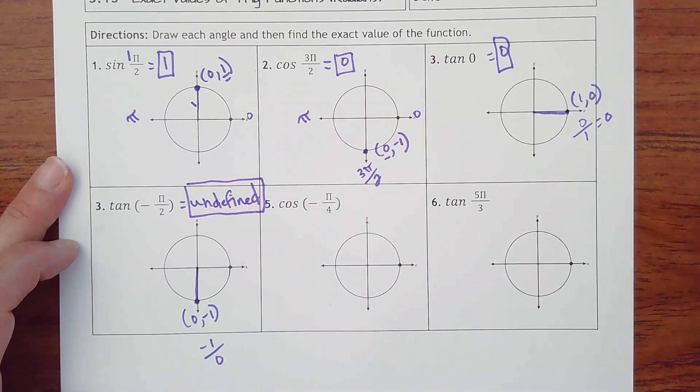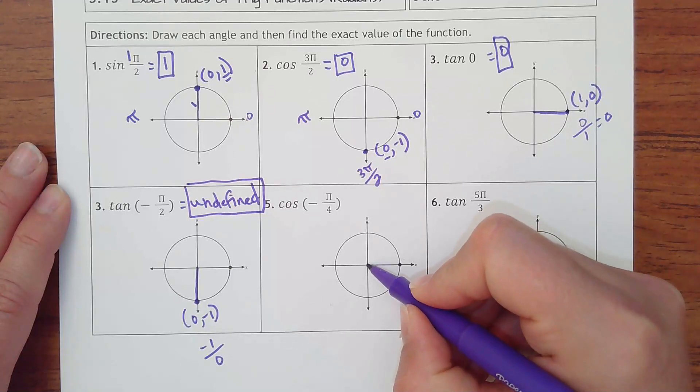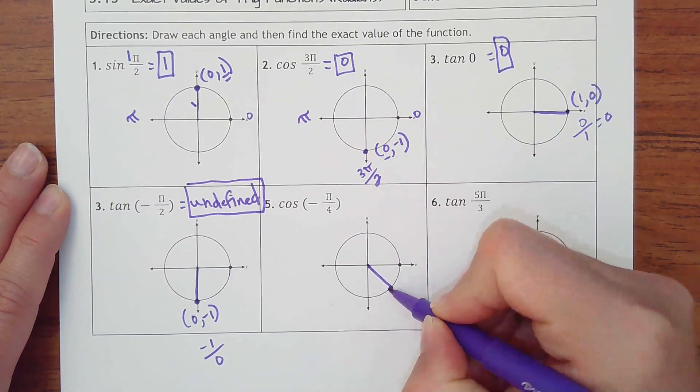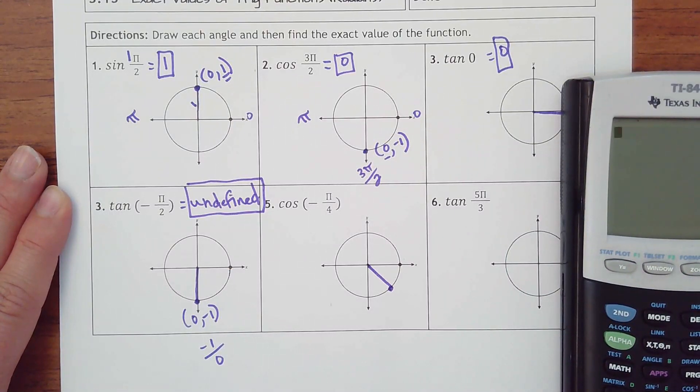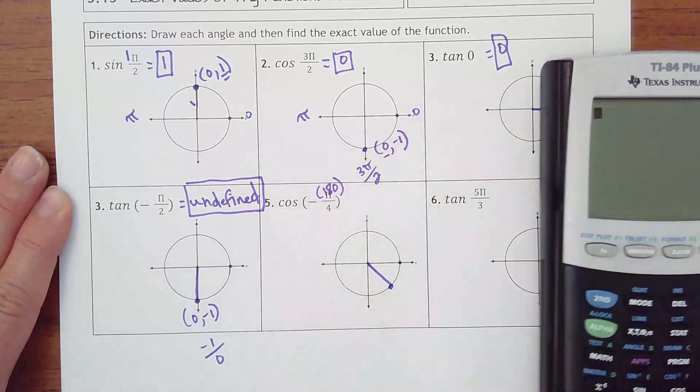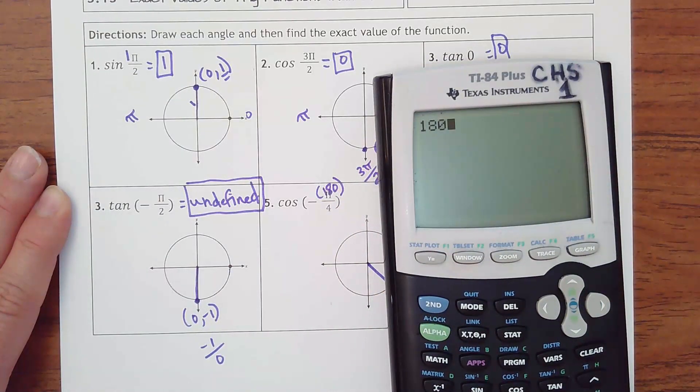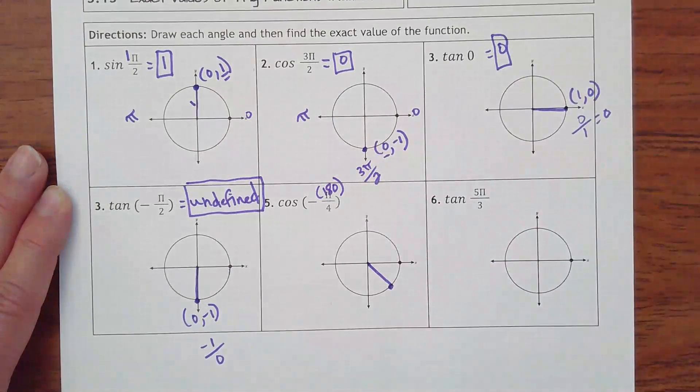Number 5 is cosine of negative 1 fourth of a pi. So 1 fourth of a pi would be here. That would be 45 degrees. And remember, if you're not ever sure, you can simply think, well, pi is 180 degrees. Just replace that in. So 180 divided by 4 gets you 45. So it's a negative 45 degree here.